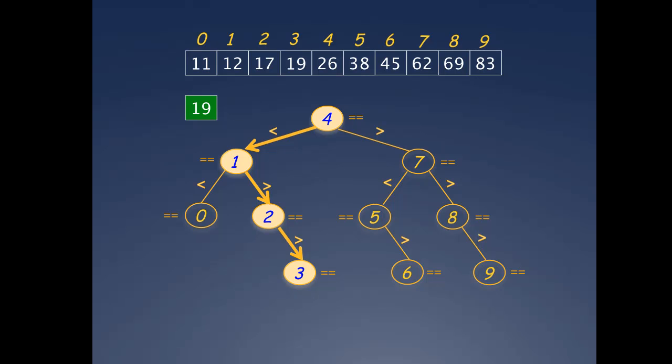You can find out how many comparisons this took by simply counting the equals, less than, and greater than markers encountered along the search path, which gives you a grand total of 7, as before.